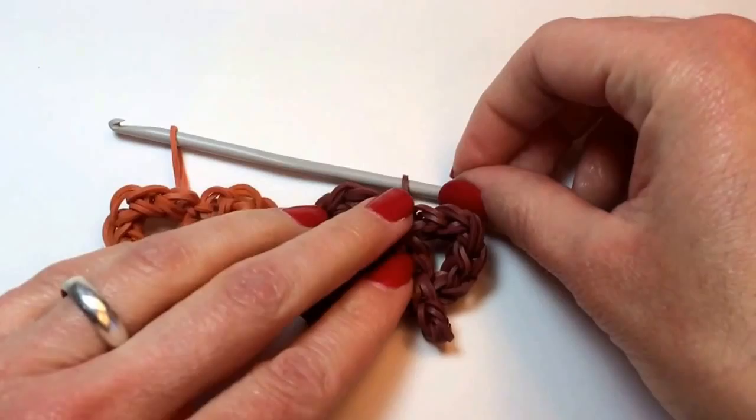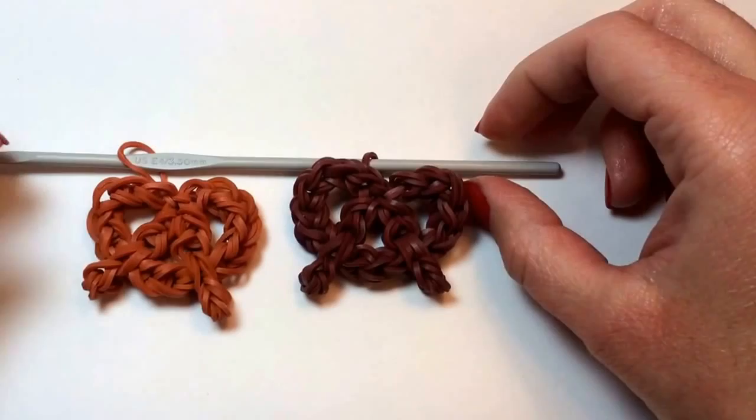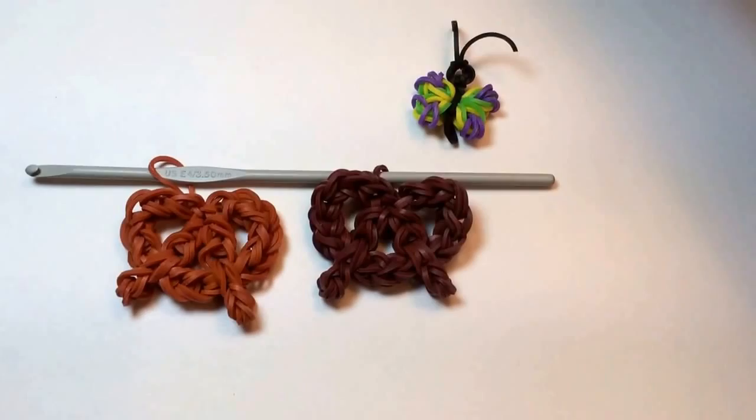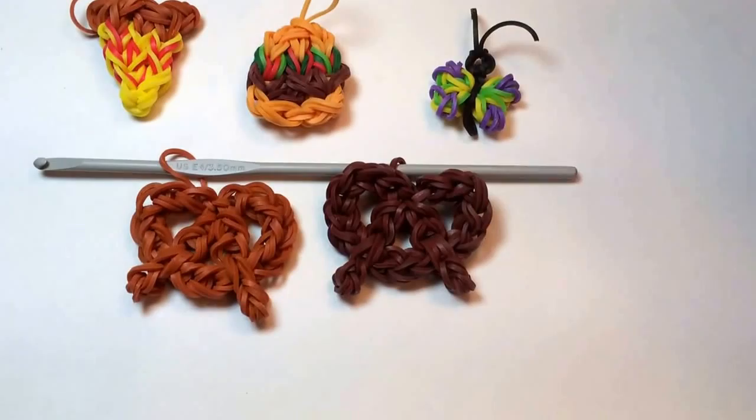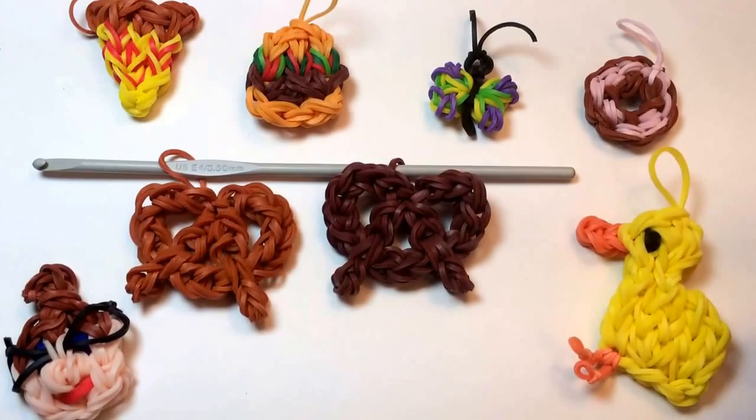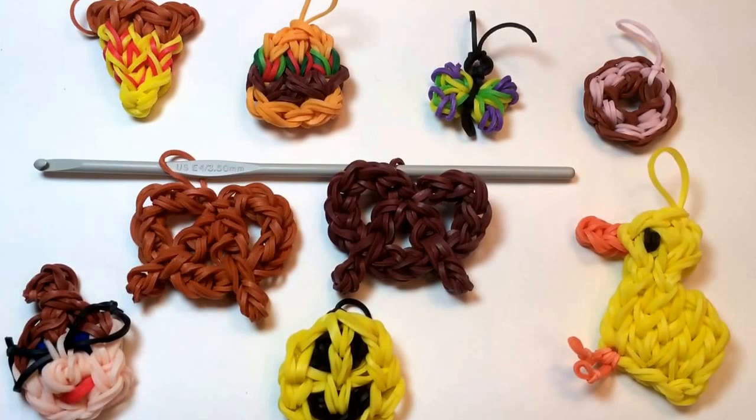If you enjoyed making this charm with me today, I have a number of other charms using just a crochet hook, such as a snowflake, and a butterfly, and a four leaf clover. I also have lots and lots of charms on the rainbow loom. If you're feeling hungry, there's the hamburger, the pizza, even a frosted donut. And then I have other fun charms like the duck and Crafty Carol and a smiley face. I hope you'll check out some of my other videos as well.